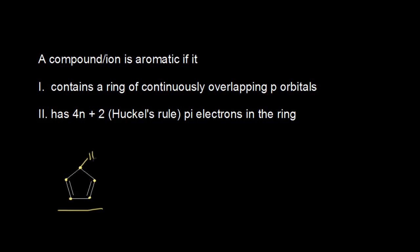That's easier to see if I draw in some hydrogens. Since this carbon has four single bonds, it is sp3 hybridized, which means it does not have a p orbital. So cyclopentadiene is not aromatic — it violates the first criteria. It does not contain a ring of continuously overlapping p orbitals, so cyclopentadiene is non-aromatic. You don't even need to check the second criteria.